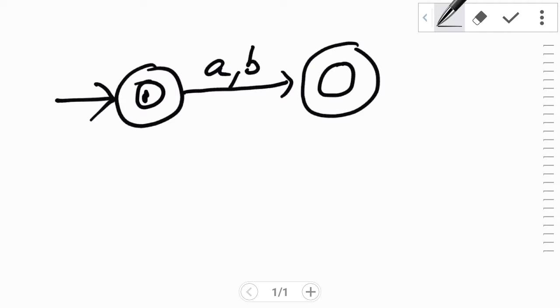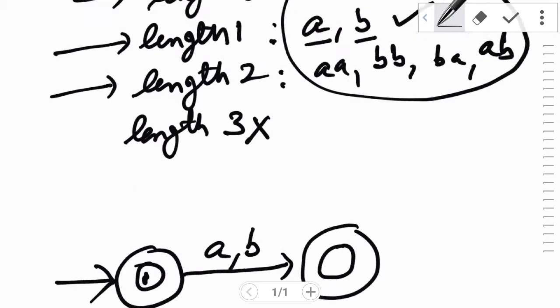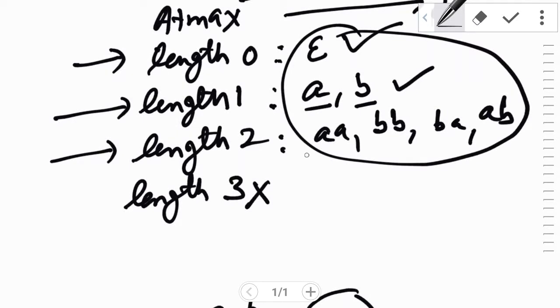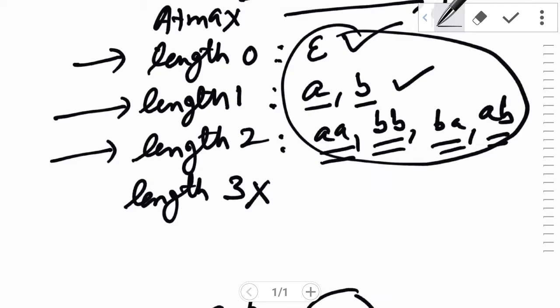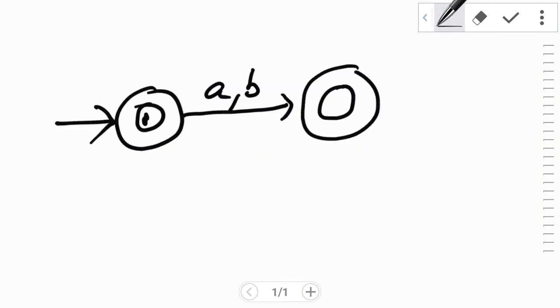Acceptance criteria is that we should transit to the final state. Next, the string of length 2, that is double A, double B, BA, and AB should be accepted. Again draw another state. If we give input as B or A, the string should be accepted. Hence even the state number 3 is the final state.